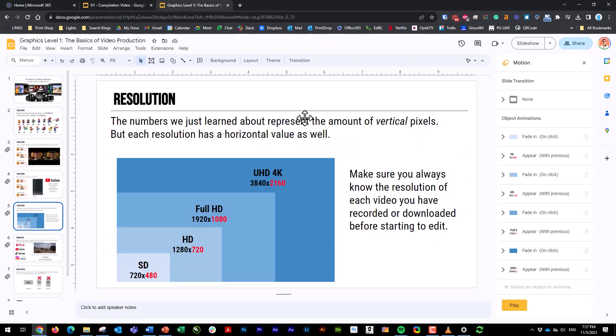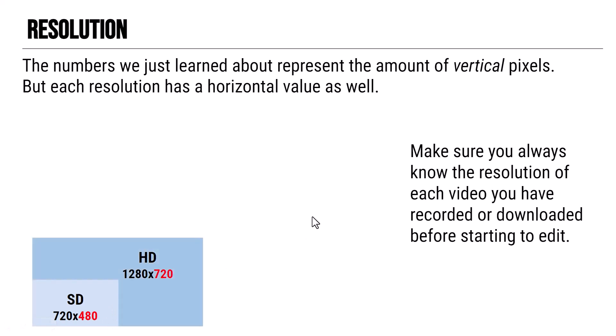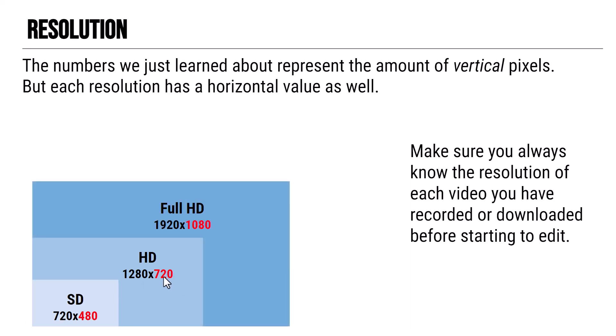With resolution, we've been talking about the number of vertical pixels, but there are also horizontal pixels, because a video on screen is a rectangle. Standard definition is 720 by 480 — that 480 is the vertical number. Regular HD is 1280 by 720, so the video is much bigger. Full HD is 1920 by 1080, and this is kind of the current standard for high definition.